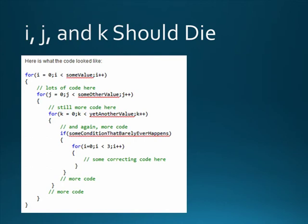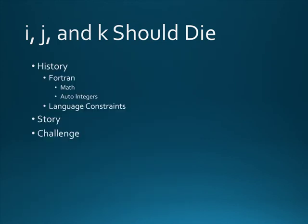My code challenge to you is this: never, ever use i, j, or k, or any other single letter as a variable name in your code. There should be a rule in your code quality checking that just prevents this, even in JavaScript code. With tools like closure compilers, there's no valid reason to use short variable names, even in JavaScript. And when you find an existing single-letter variable name, change it to something meaningful.